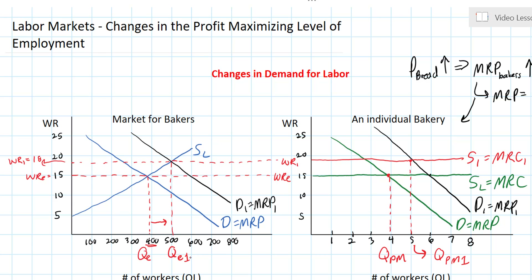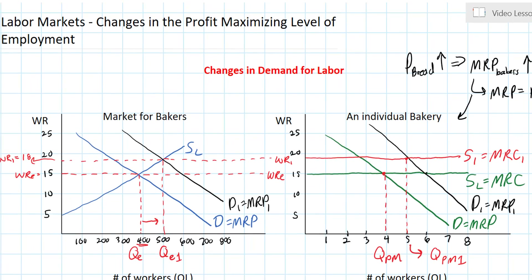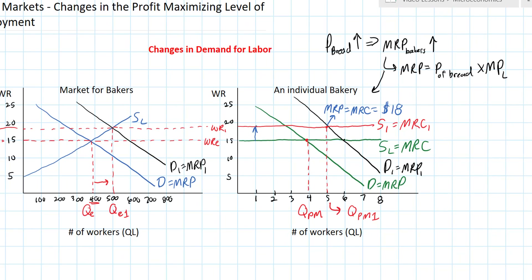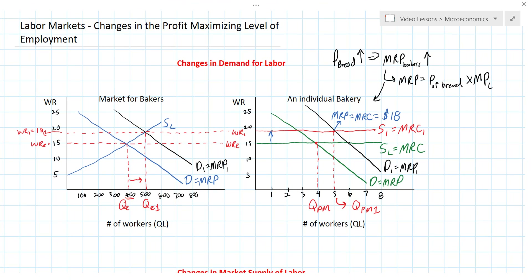This is the adjustment that takes place in labor markets. If the demand for labor increases among individual firms, it will drive up the market demand for labor and cause the equilibrium wage rate and level of employment to rise. In order for firms to maintain their profit maximizing level of employment, they must hire more workers up to the point where MRP equals MRC. The revenue earned by the last worker hired is $18, and the wage rate is $18, so it costs the firm $18 to hire that fifth worker. The firm now pays all of its workers $18, up from the previous wage rate of $15, because the price of bread has risen and the revenues each worker earns for the firm have increased.